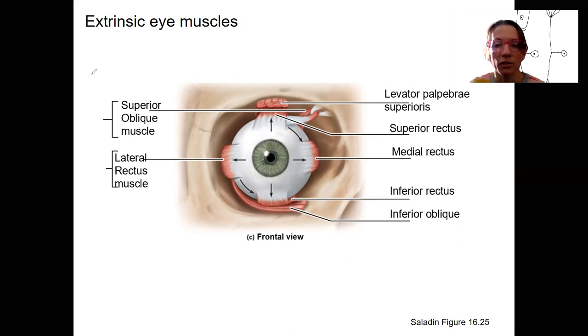These are innervated by cranial nerves. So over here, we've got these two innervated by the trochlear and abducens. And you know of another cranial nerve that is related to eye movement.